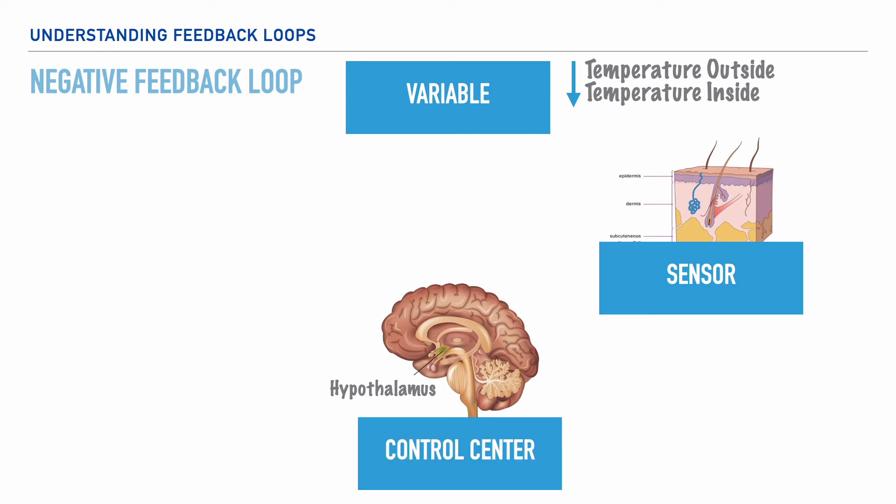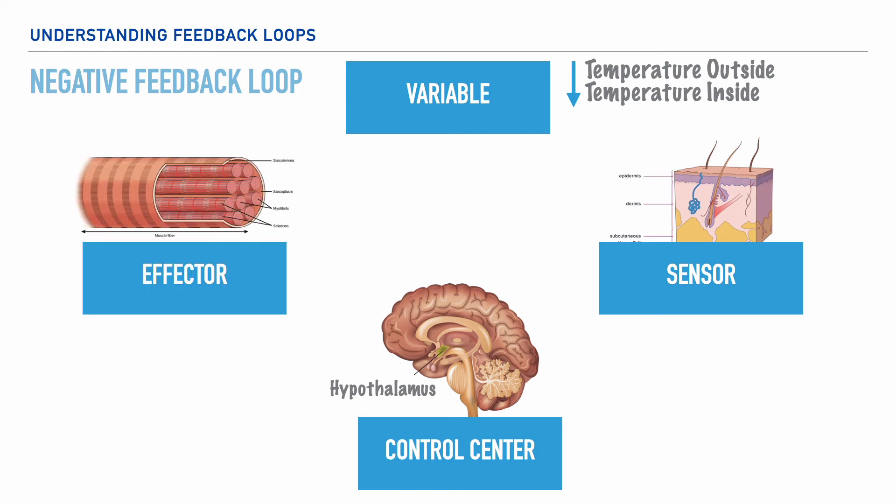So, this control center causes stimulation of an effector. And in this case, the effector would be our muscles that begin contracting, producing a shivering response to help warm the body. And as a result, we'd have a gradual increase of the internal body temperature.